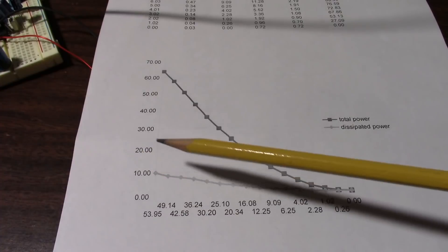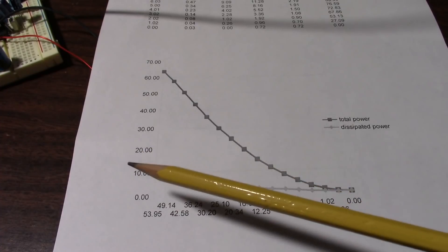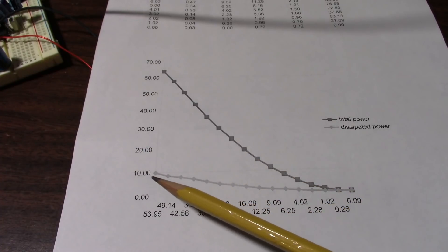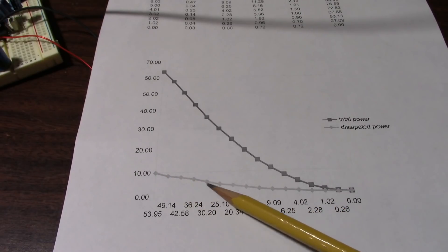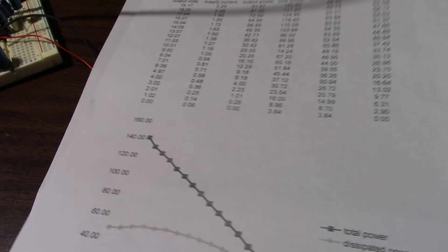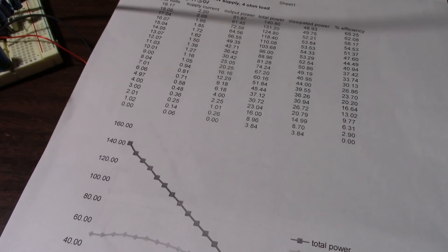I also did a graph here. And yeah, nothing really that interesting. The dissipation is pretty low. I mean, we start around 10 watts and it just drops from there. So how does it compare with the Class AB amp?